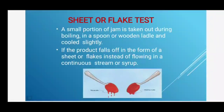There are tests to determine whether the endpoint has been reached. In the sheet or flag test, a small portion of jelly is taken out during boiling in a spoon or wooden ladle and cooled slightly, then allowed to drop. If the product falls off in the form of a sheet or flag instead of flowing in a continuous stream of syrup, the endpoint has been reached and the product is ready; otherwise boiling is continued.